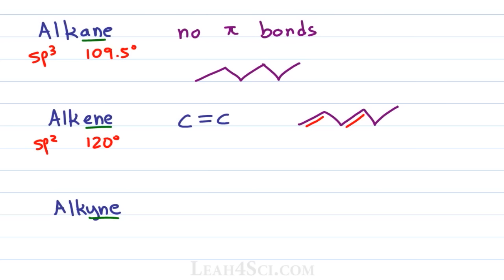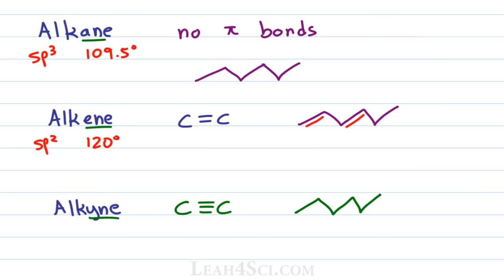An alkyne is a triple bond between two carbon atoms. You'll see three lines between two carbon atoms: the first is a sigma bond on your sp hybridized carbon, and the second and third are pi bonds sitting in p orbitals — one in the py and one in the pz. Many professors represent a triple bond the same way as a double and a single in a zigzag, but this is incorrect because a triple bond is sp hybridized with a bond angle of 180 degrees. The correct way to represent it is a linear line where the triple bond sits between the two carbon atoms, with the atoms on either side also in a straight line.